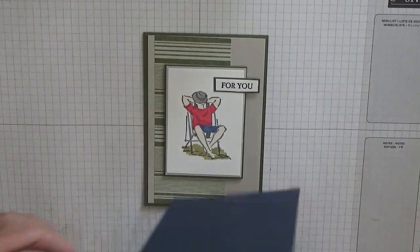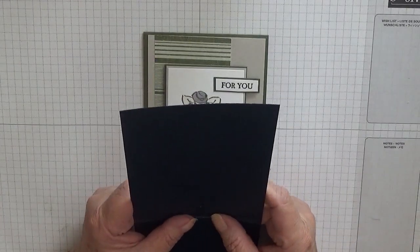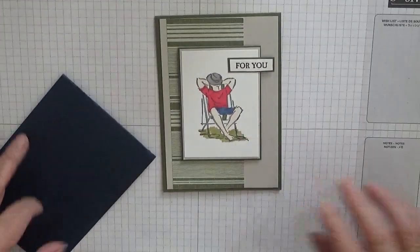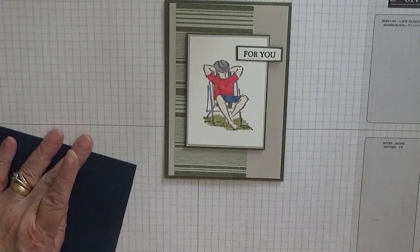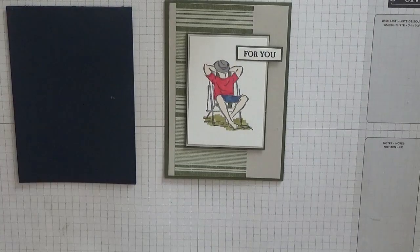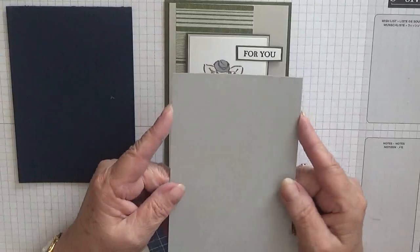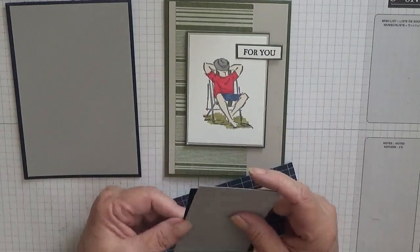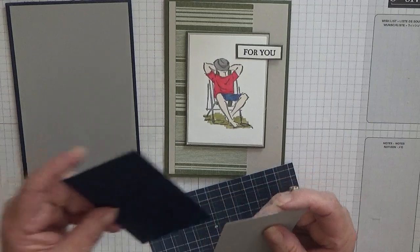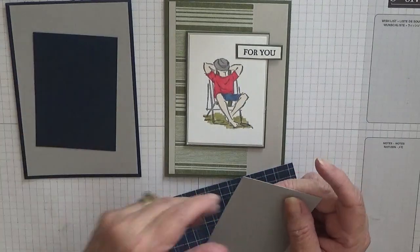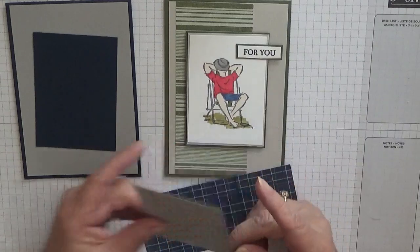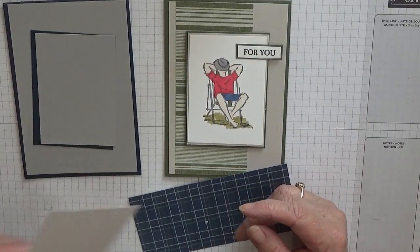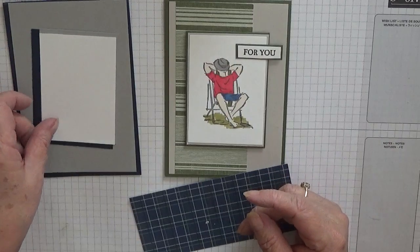I've got a Knight of Navy card base of eleven and three quarters by four and one eighth, scored at five and one eighth, folded in half and burnished. I have a piece of Smoky Slate at five and five eighths by three and seven eighths, a piece of Knight of Navy at two and three quarters by three and three quarters.